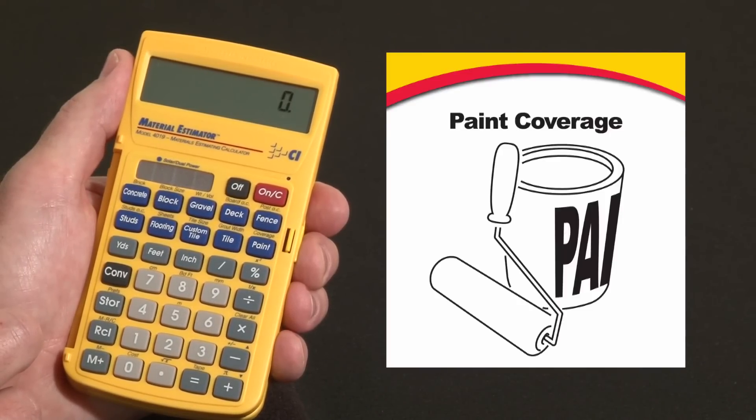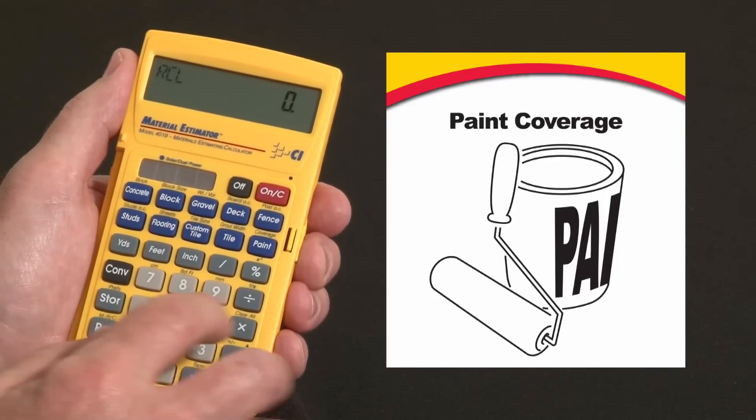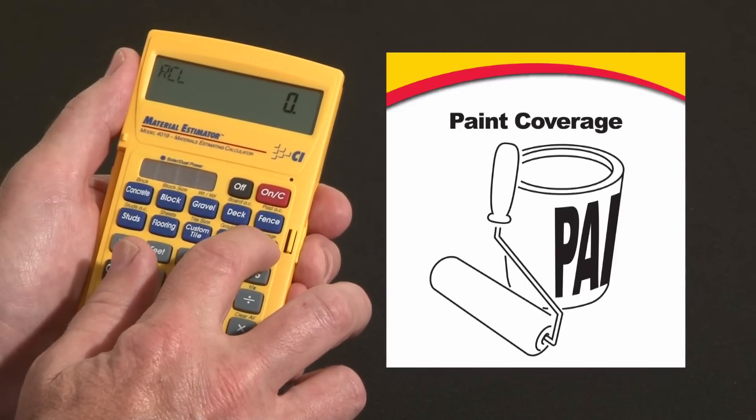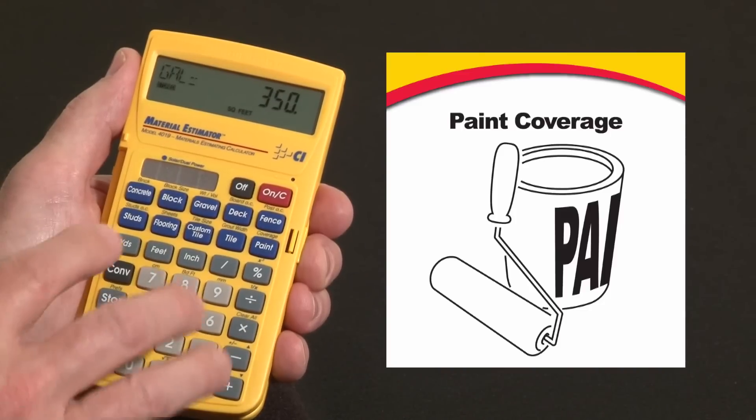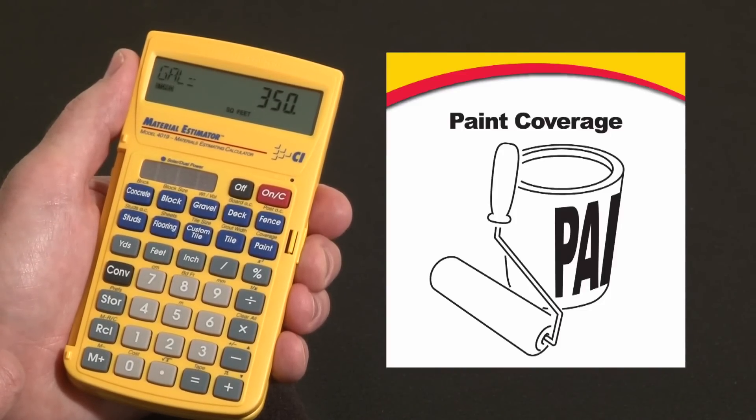To start off with, the default coverage rate in the calculator—over the paint key it says coverage—so I hit recall coverage: one gallon covers 350 square feet. We'll use that for now, but we can change that very easily as well.